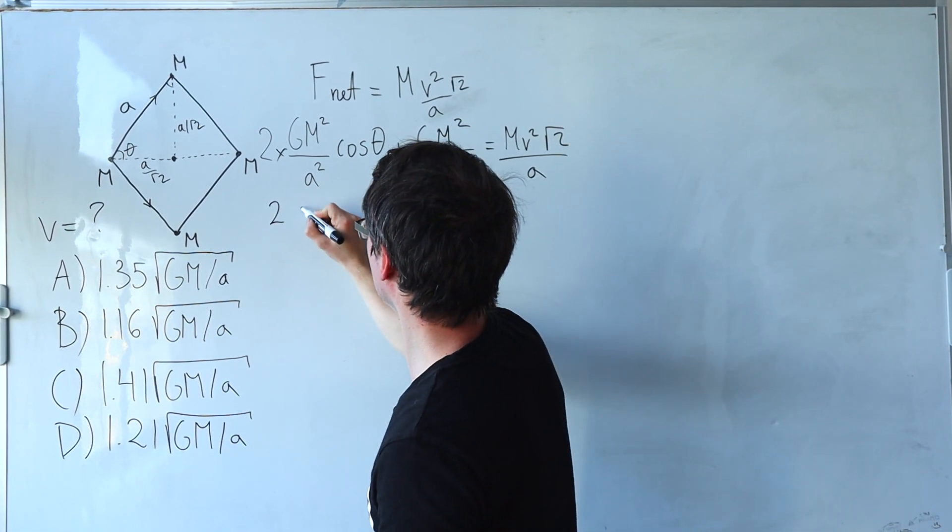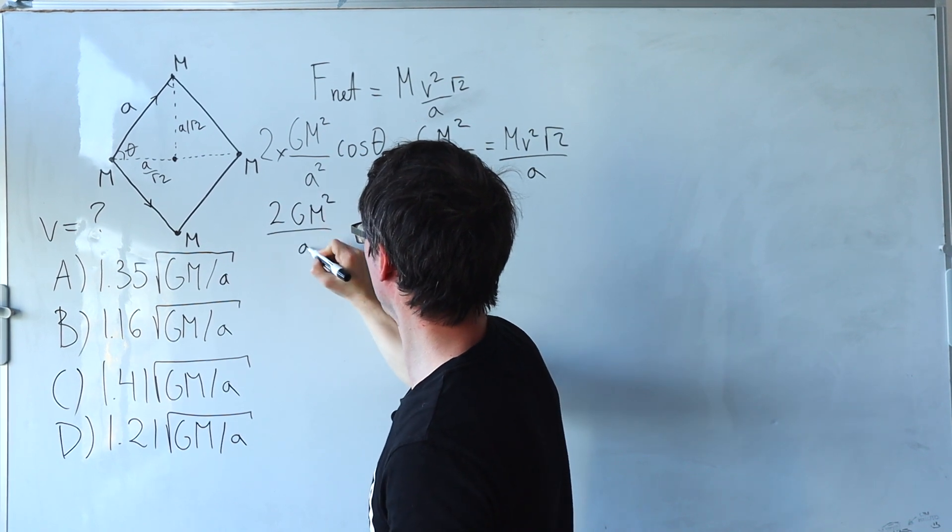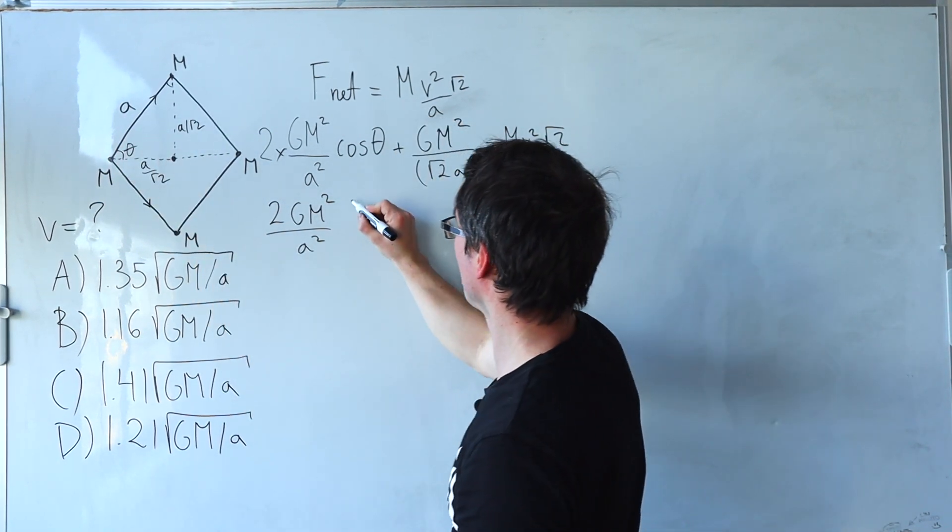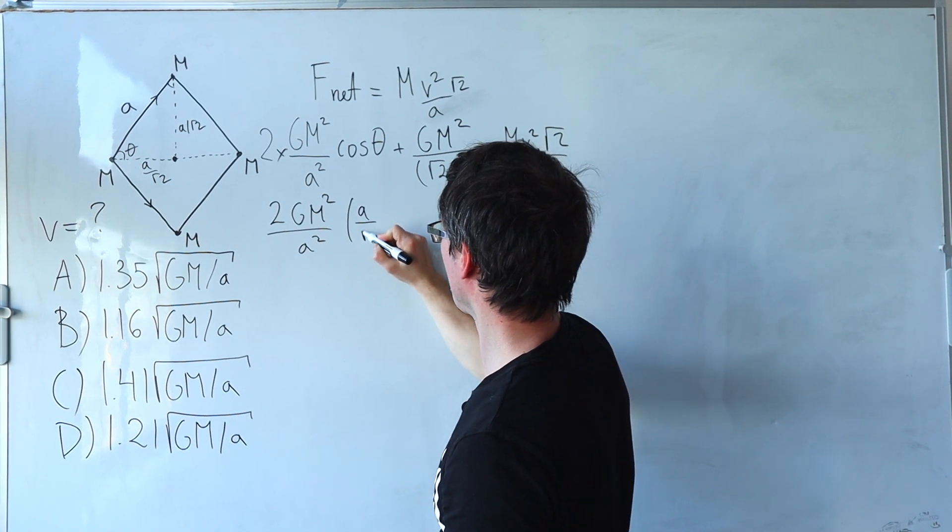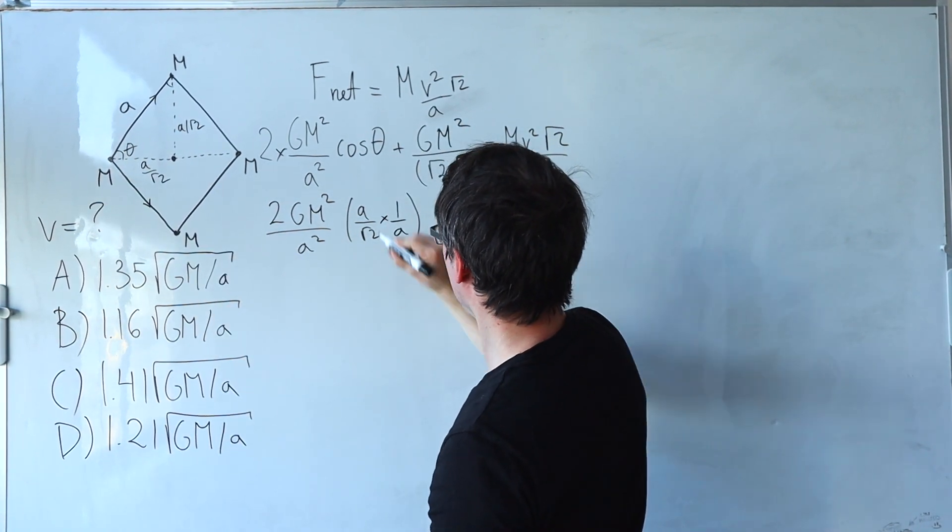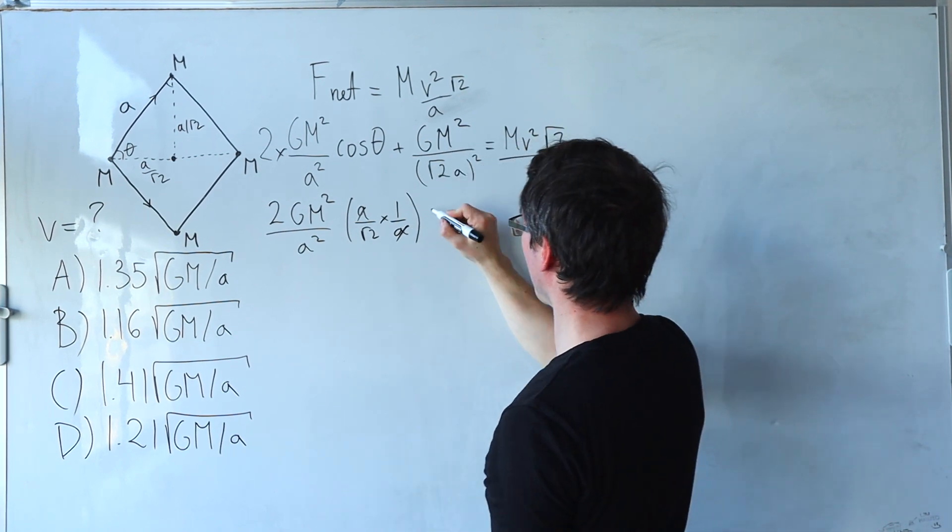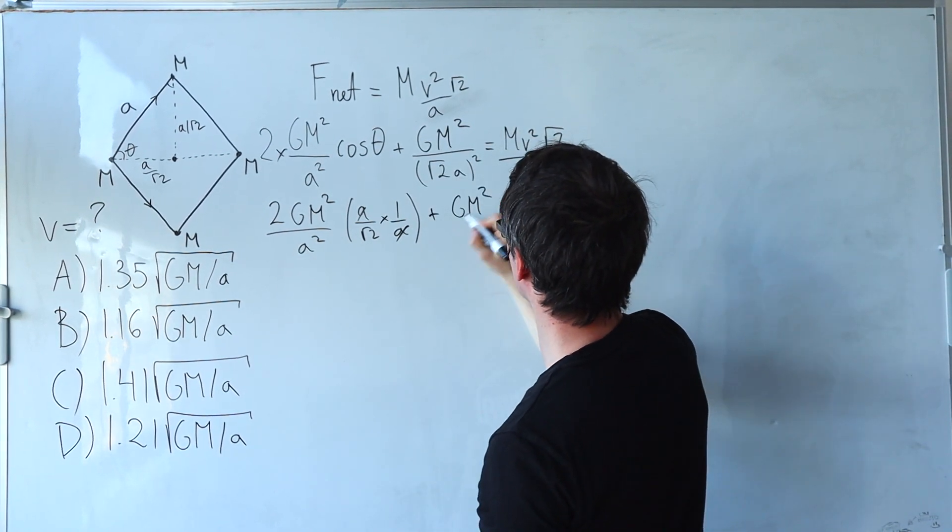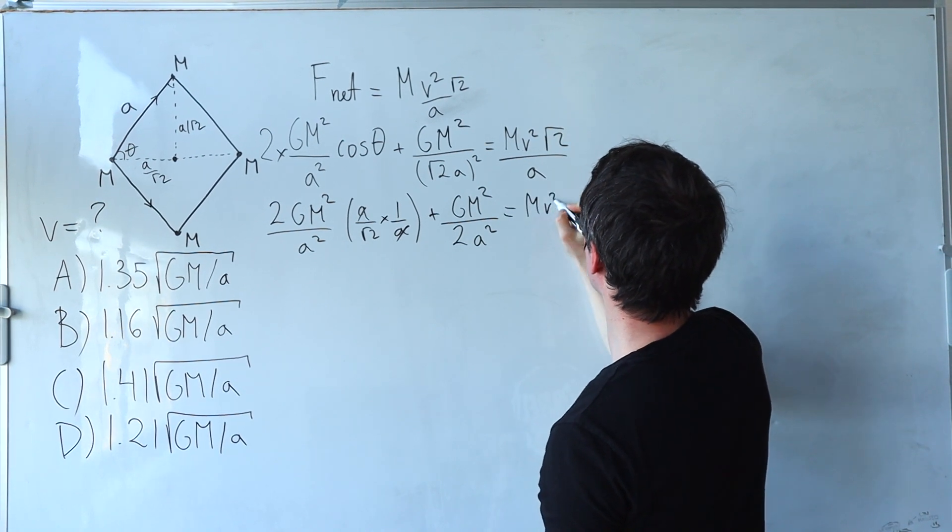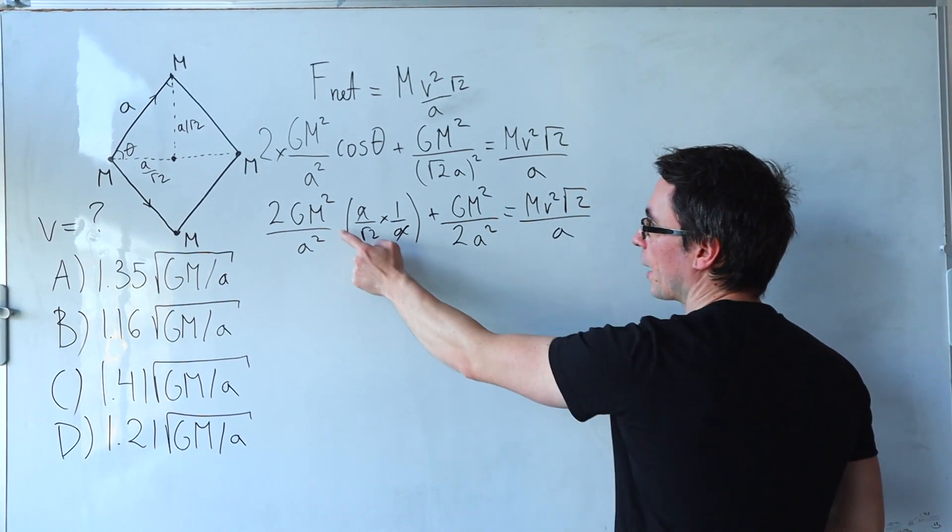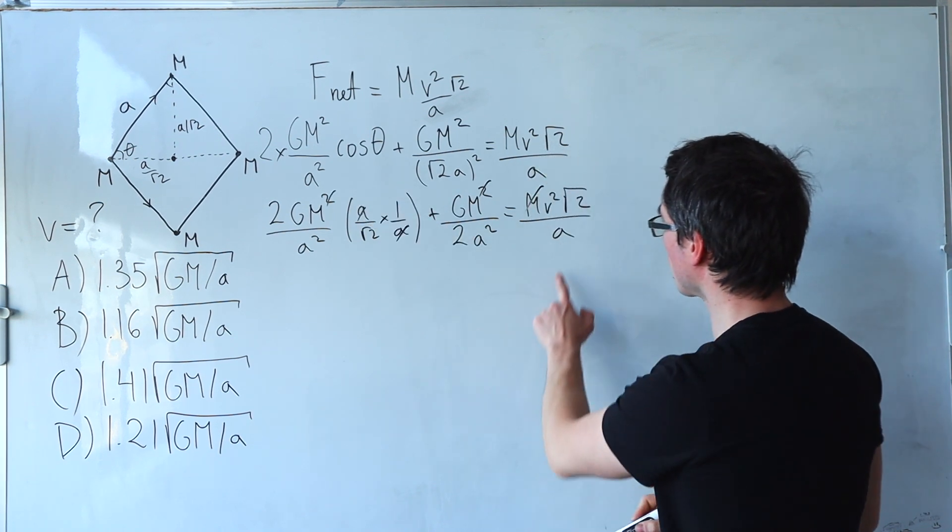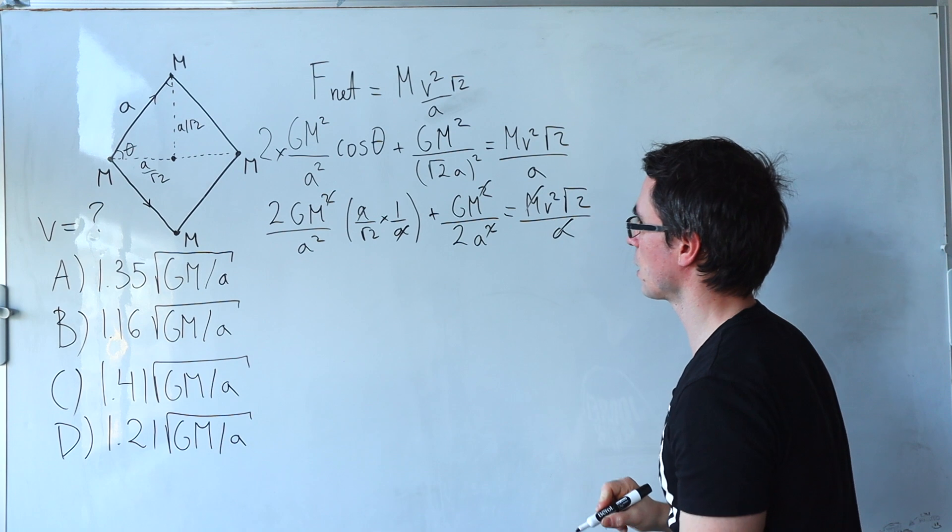Let's simplify even further. So what are we going to get? 2 g m squared over a squared. Now this cosine term - cosine is just adjacent over the hypotenuse. The adjacent is just a over root 2. We're going to divide this by the hypotenuse which is just a. Of course these ones here will just cancel out plus g m squared over 2 a squared which will be equal to m v squared root 2 divided by a. And now we can cancel out some of those m's and a's. Additionally we can cancel out this a here as well.